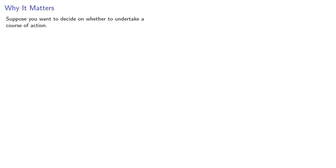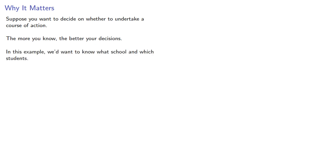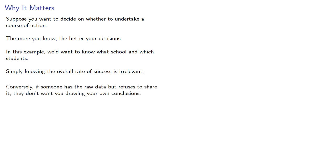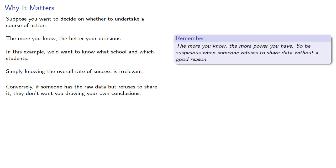Simpson's paradox is an important thing to keep in mind whenever we try to make decisions based on evidence. The more you know, the better your decisions. In this example, we'd want to know what school and which students — simply knowing the overall rate of success is irrelevant. Conversely, if someone has the raw data but refuses to share it, they don't want you drawing your own conclusions. Remember: the more you know, the more power you have. So be suspicious when someone refuses to share data without a good reason.